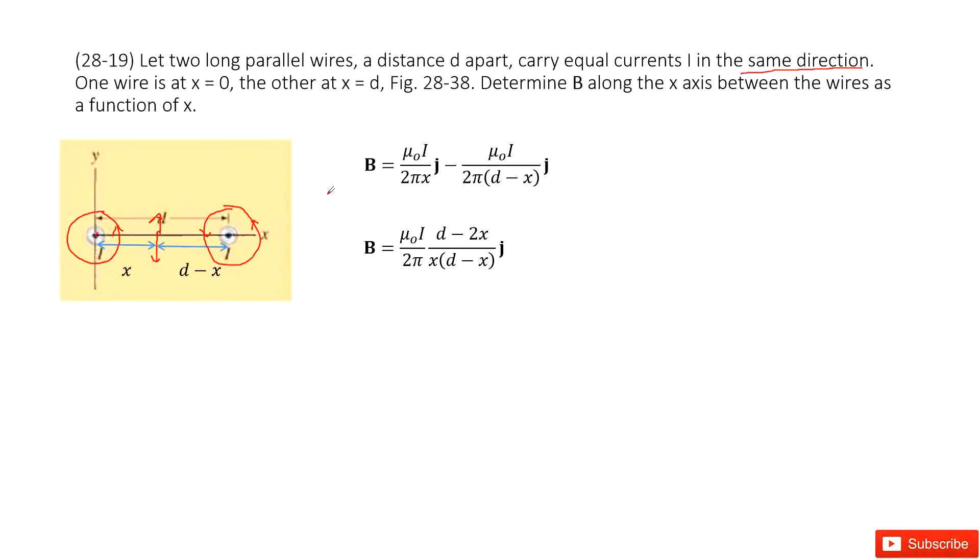Next, can you write down the magnetic field in vector format? Yes. From this wire one, we can see μ₀i divided by 2πx. It's up, so positive.